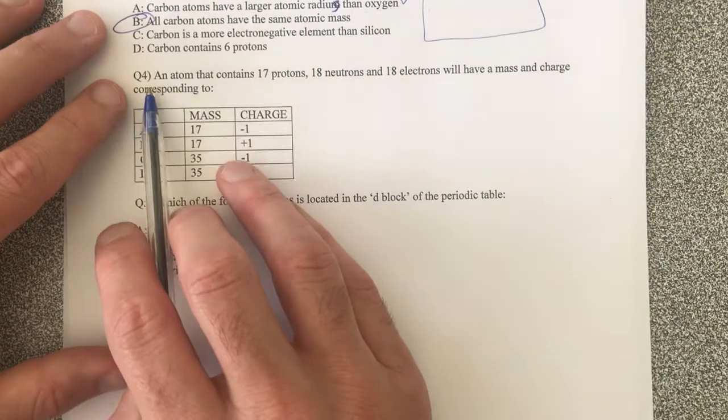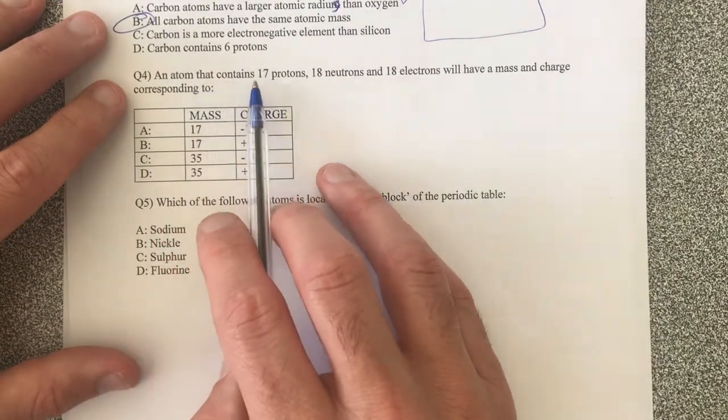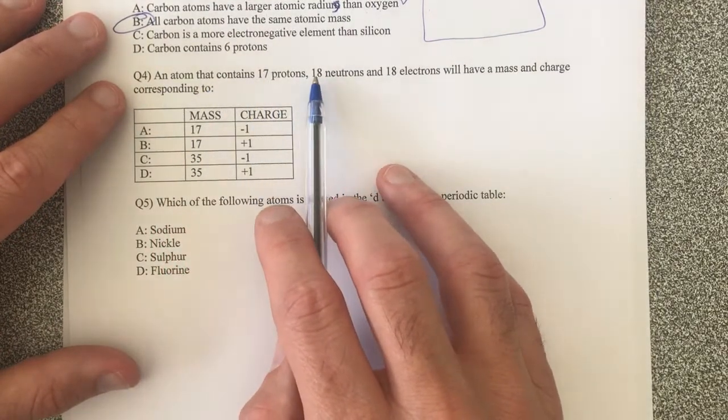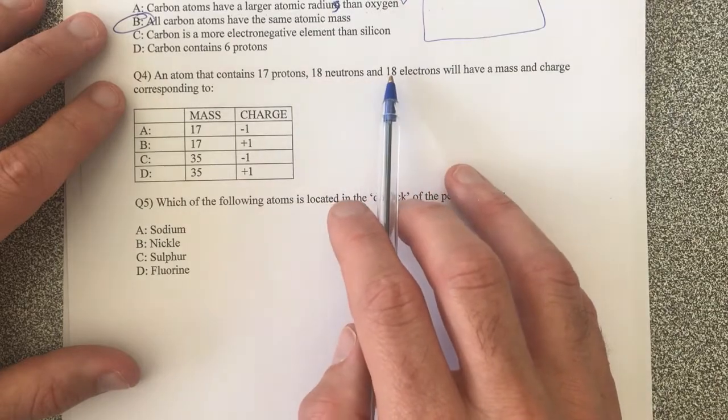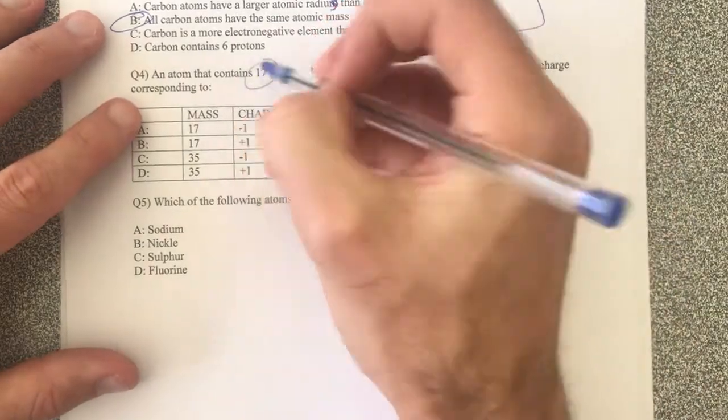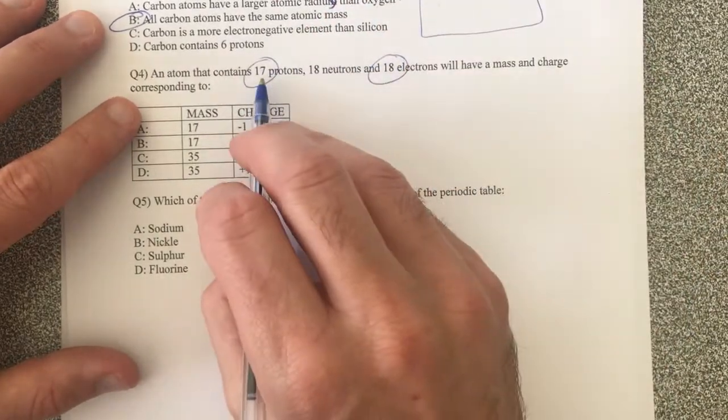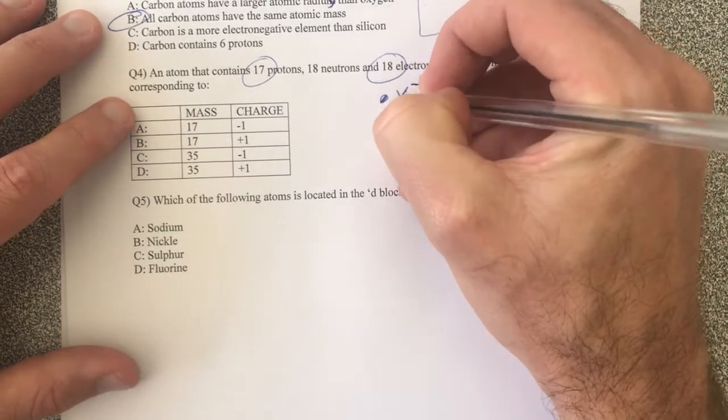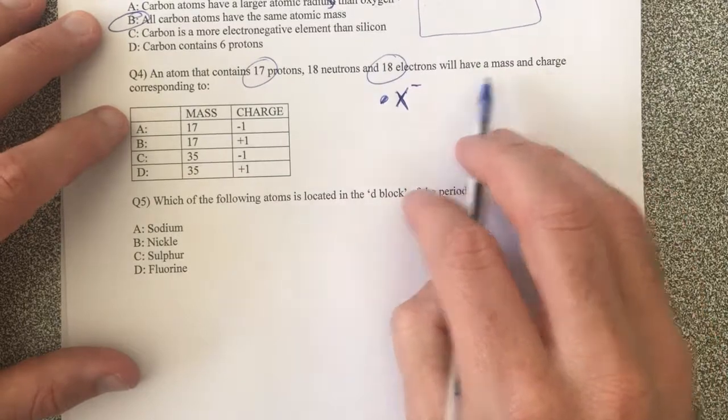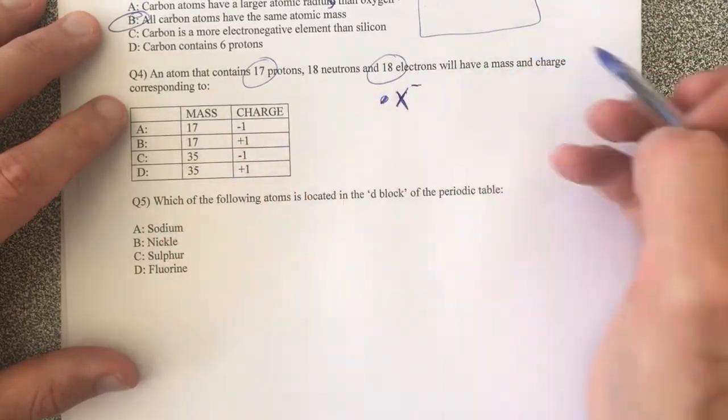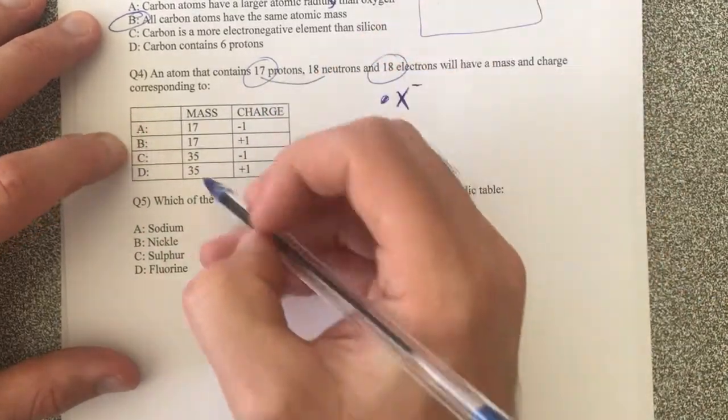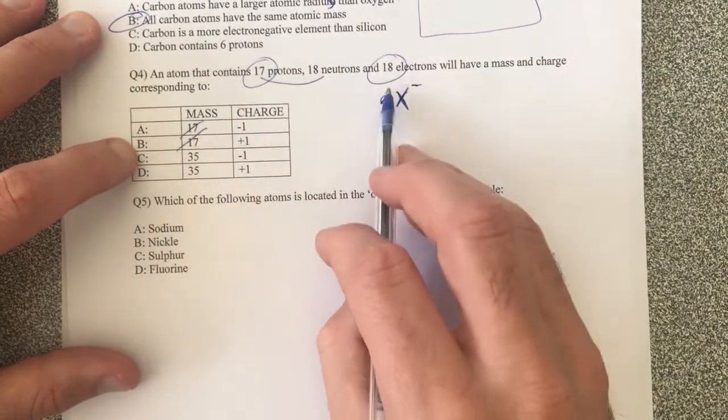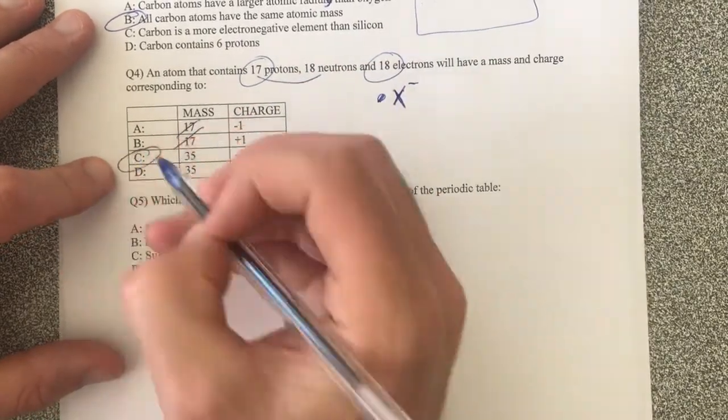Moving on to question four. An atom which contains 17 protons, 18 neutrons and 18 electrons. Notice the fact that we've got more electrons than protons. That makes it negatively charged. So it should be x negative. We'll have a mass and charge corresponding to what? Well, the mass comes from the protons and neutrons. So we can rule out these two. And the charge, as I said, must be negative. So therefore it must be c.